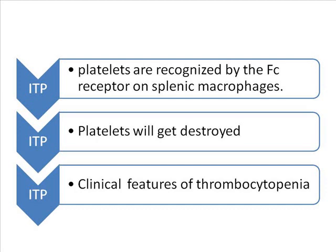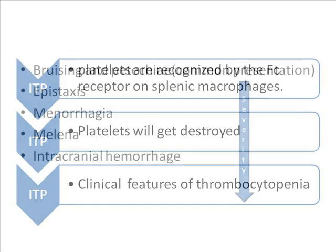The complement system will rapidly destroy the platelets. Once platelets are destroyed, this is called thrombocytopenia — rapid destruction of platelets. Followed by thrombocytopenia, the child will present with the clinical features of thrombocytopenia, which I will explain in the next slide.